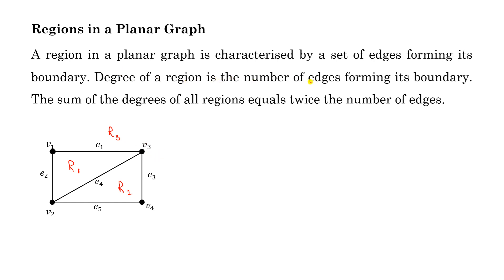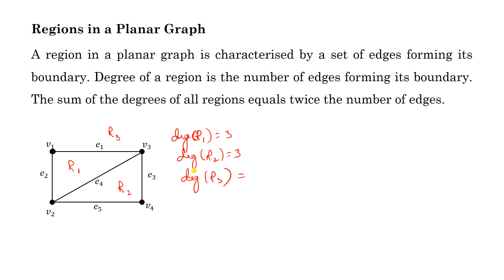The degree of a region is the number of edges forming its boundary. The degree of R1 is 3, the degree of R2 is also 3, and the degree of R3 — look at this — four edges E1, E3, E5, and E2 form the boundary of R3, so its degree is 4.